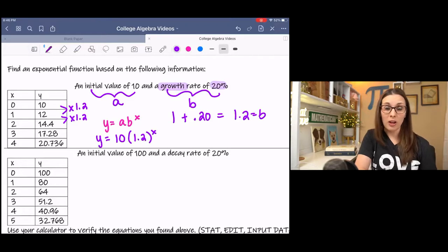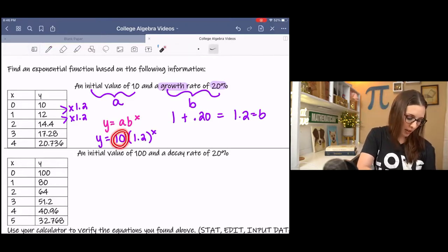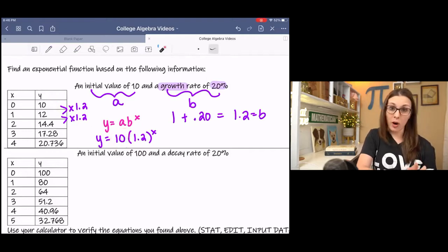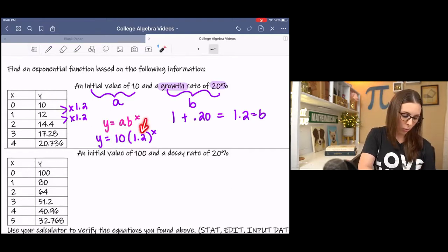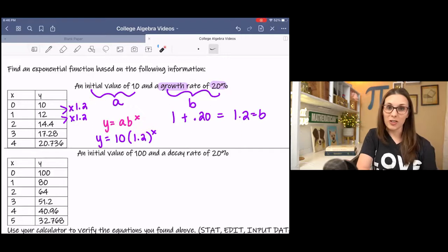Now, if you look back at the table of values, you can see where that comes from, hopefully. 10 is the initial value, the y-intercept, and 1.2 is the change factor, and that's all. Isn't that so easy?